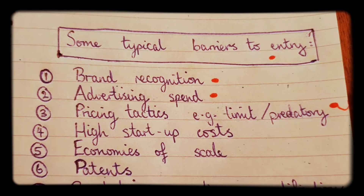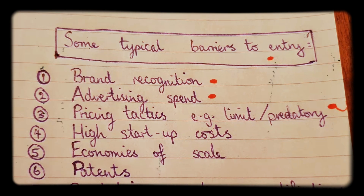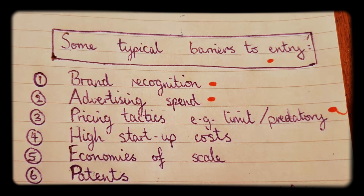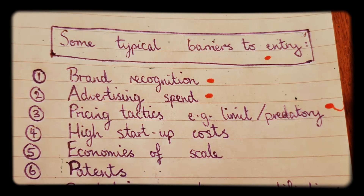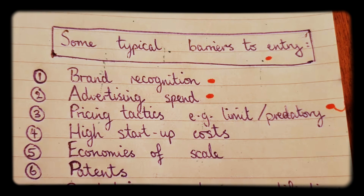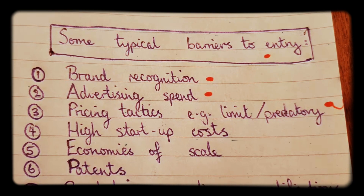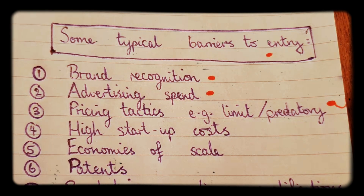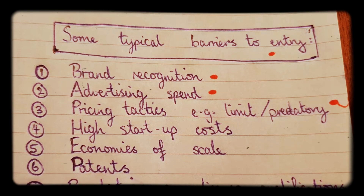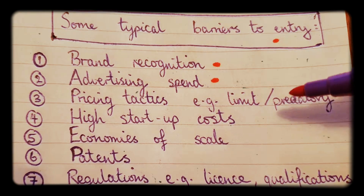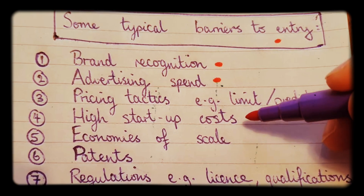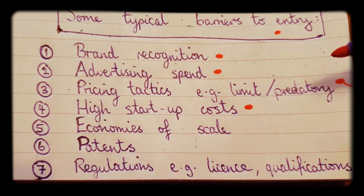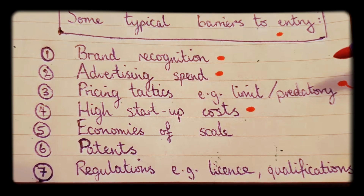Another barrier to entry can be pricing tactics — limit or predatory pricing. This is basically when the firms already within the market use aggressive pricing tactics. They might lower their prices to try and kick you out of the market, and they're able to do that because they have lower costs than you.